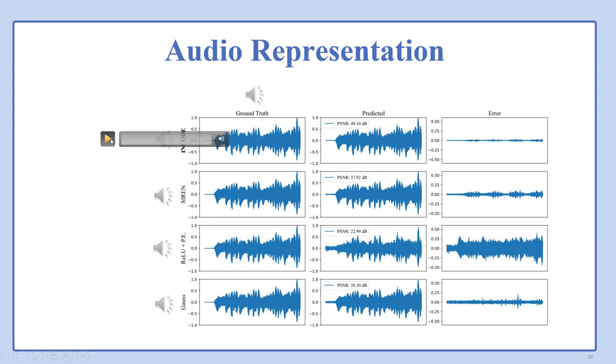This is the result of ENCODE. This is for SIREN. As you can see, there is some noise. And this is for ReLU. As you can see from the error rate, the noise is much more intensified in ReLU plus positional encoding approach. And this is for the Gauss-based activation function approach. As you can see, the error is much more highlighted than the raw audio.